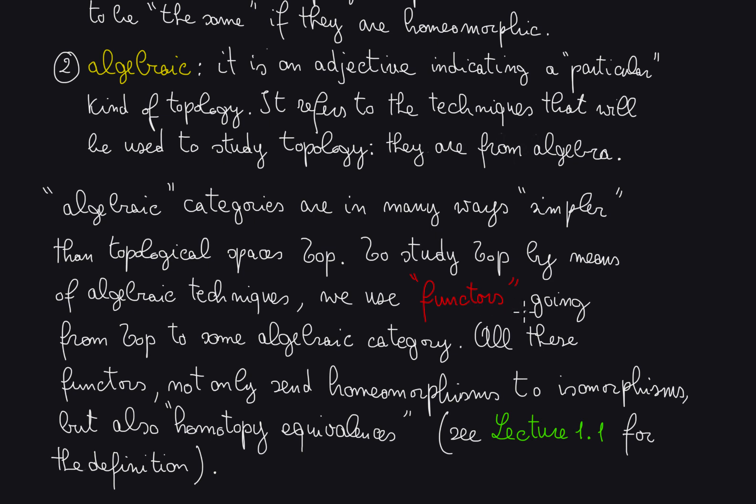These functors go from top to some algebraic category. All of these functors not only send homeomorphisms to isomorphisms, but also homotopy equivalences, which is a more relaxed concept, to isomorphisms. See lecture 1.1 for the definition of homotopy equivalences.